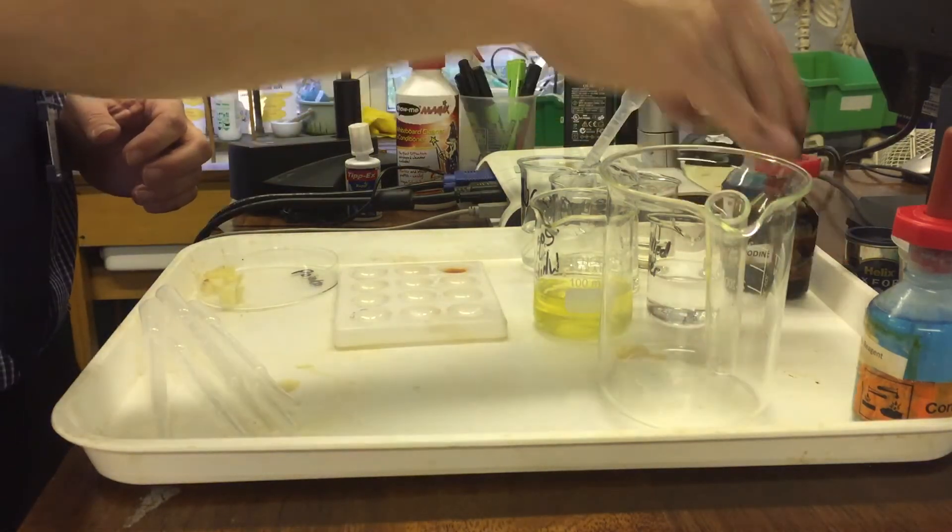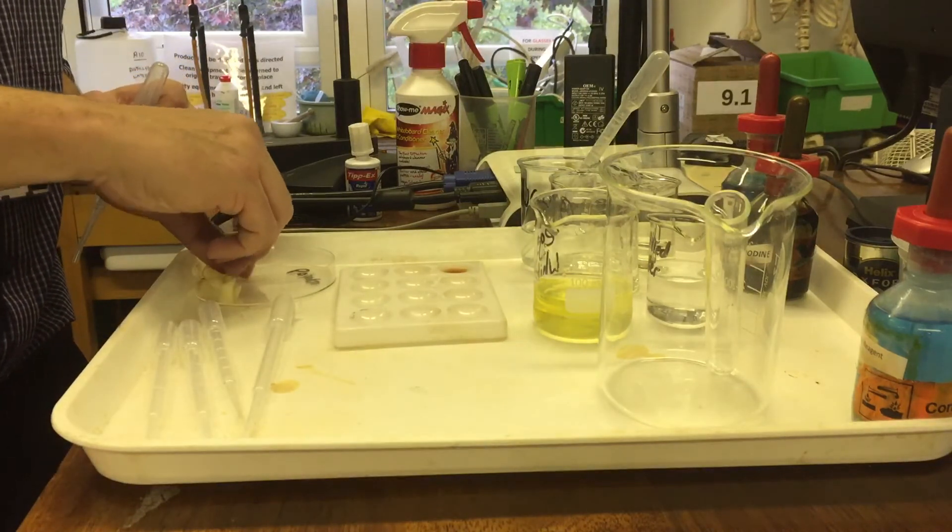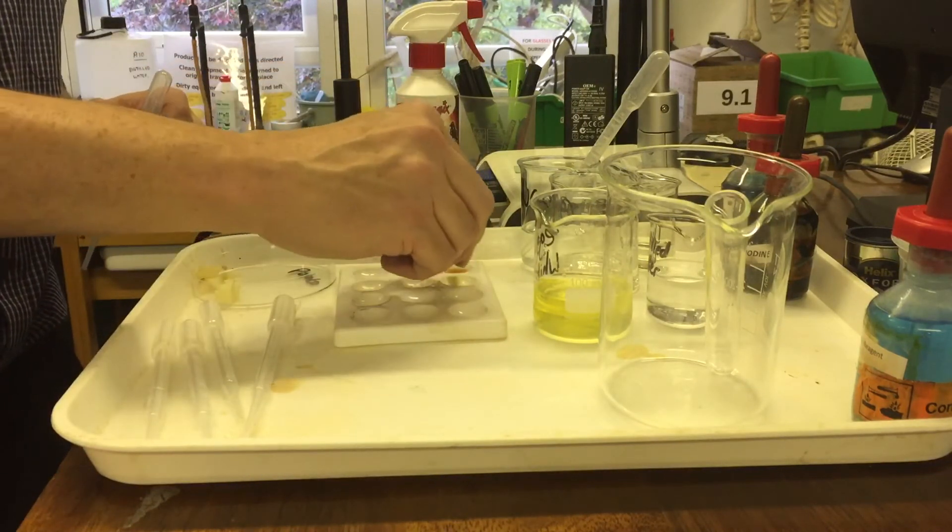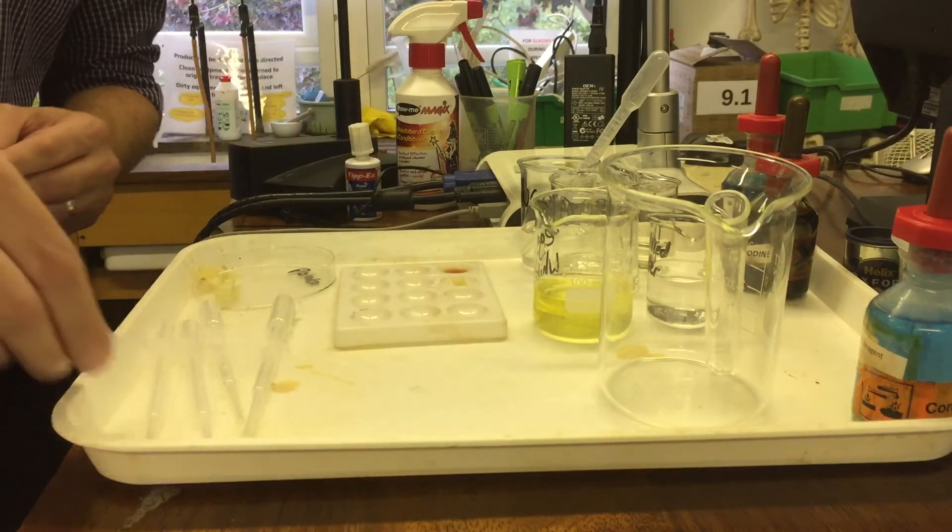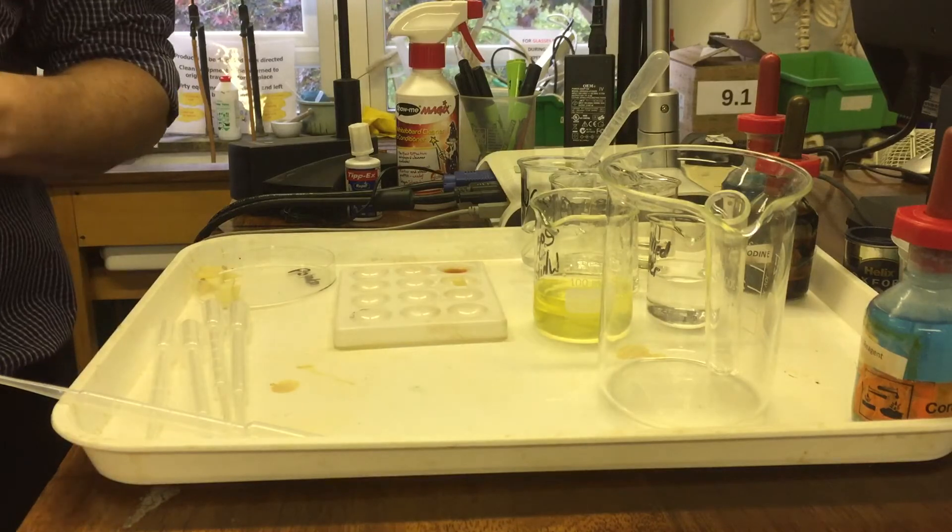So let's take our bit of potato, which is something that contains starch. Can anyone name two other things that contain starch? Pasta. Pasta and bread. Anything that's basically a cereal grain.